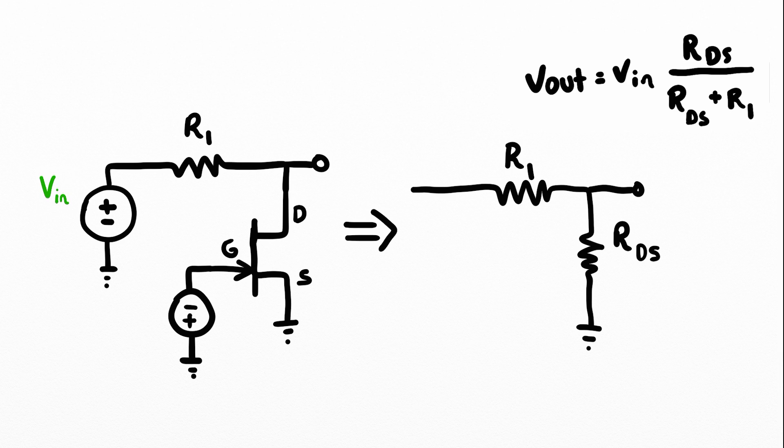When RDS is small, our amplitude value is small. And when it increases, our output amplitude increases. So as the drain to source resistance increases, our voltage output will also increase.